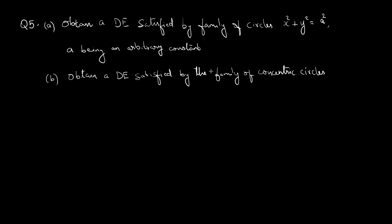In part a, the family of circles x squared plus y squared equals a squared is given. We need to obtain a differential equation from that, eliminating the only one arbitrary constant a. The differential equation will be of first order, since we have only one arbitrary constant.